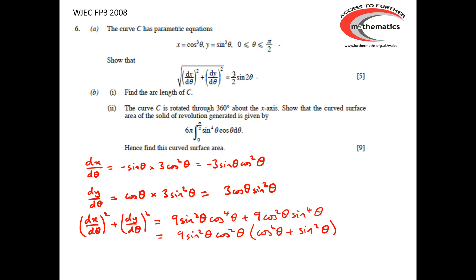So (dx/dθ)² + (dy/dθ)² turns out to be 9 sin² θ cos⁴ θ + 9 cos² θ sin⁴ θ. Taking out the common factor of 9 sin² θ cos² θ gives 9 sin² θ cos² θ × (cos² θ + sin² θ). Since cos² θ + sin² θ = 1, this simplifies to 9 sin² θ cos² θ.